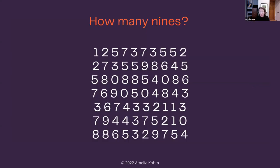Here's another little test for you. How many nines do you see in this array of numbers? When I add color, it's really easy to pick out the nines. This is just an example of how quickly we can assess visual cues like color.